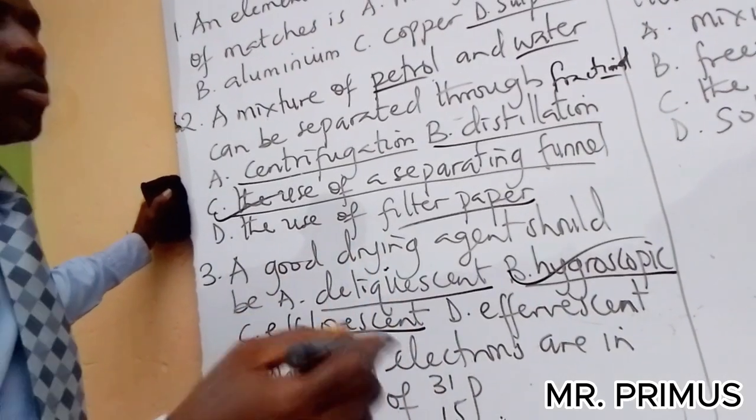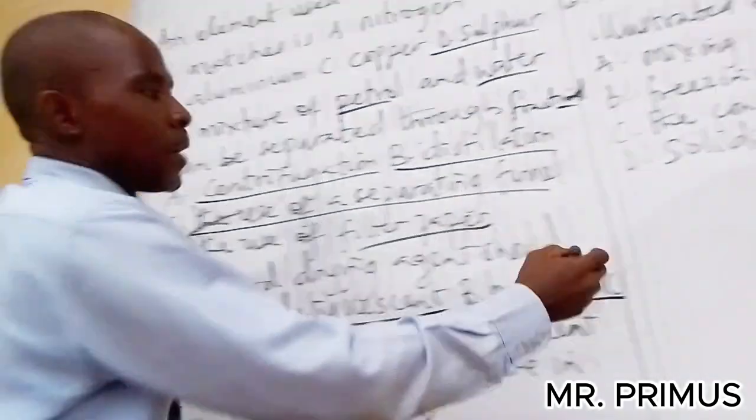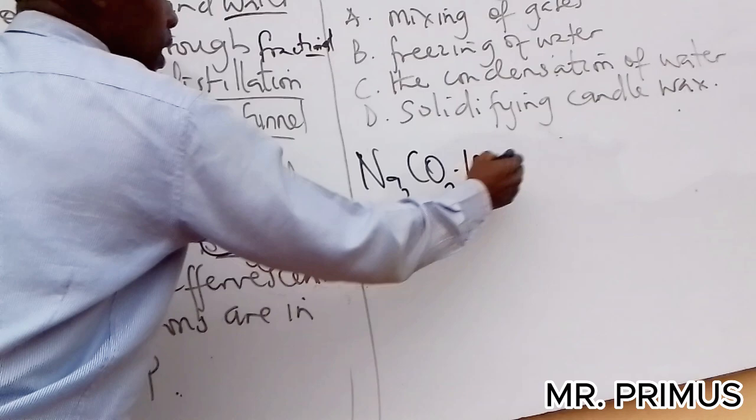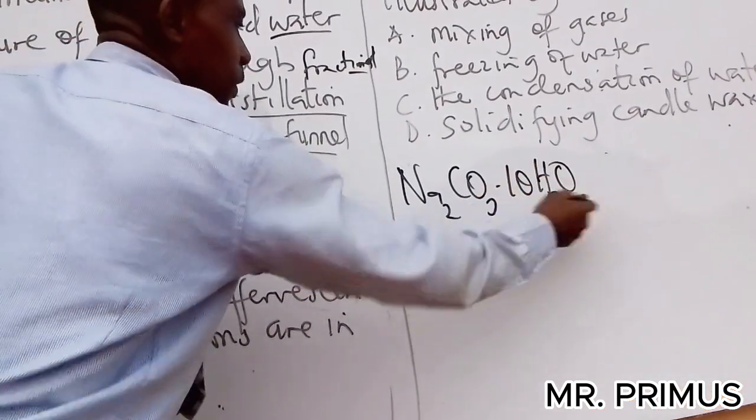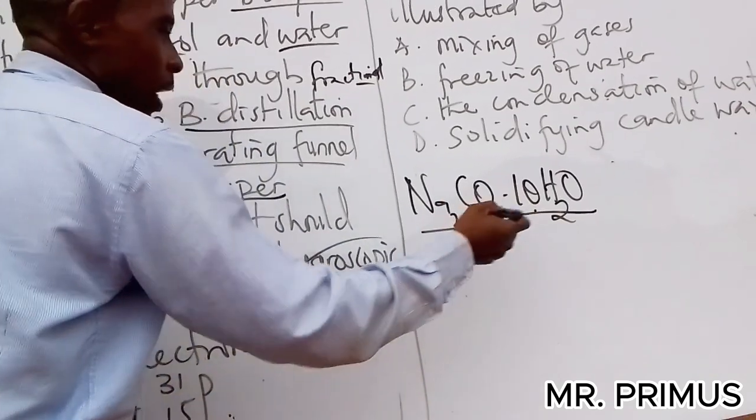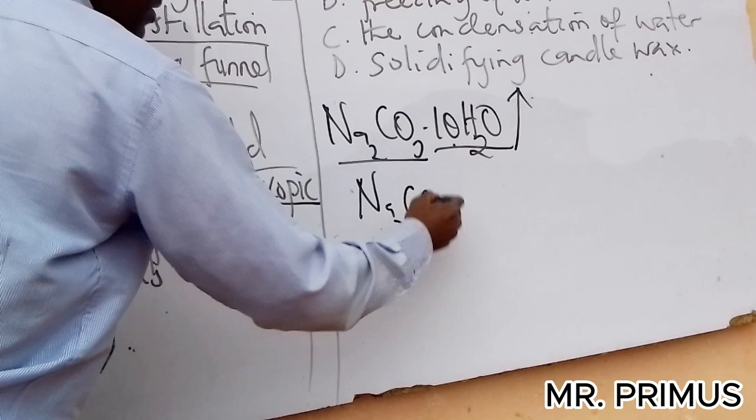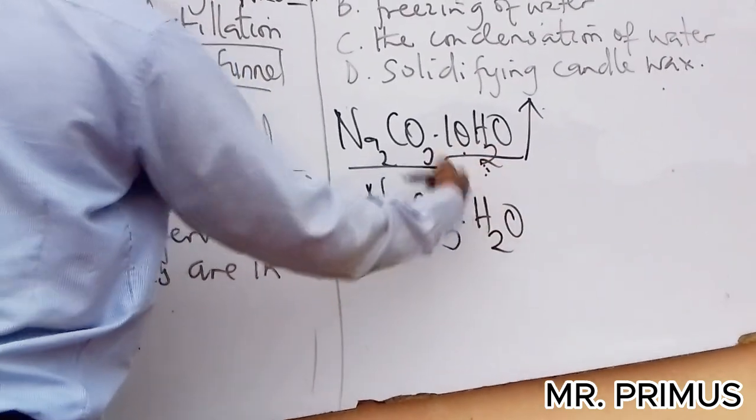Efflorescence is when a substance loses all or part of its water of crystallization. Let me show it here. If you have something like this, then H2O, this is water of crystallization. If this water goes and you may have something like this dot H2O, it has lost nine. This is efflorescence.